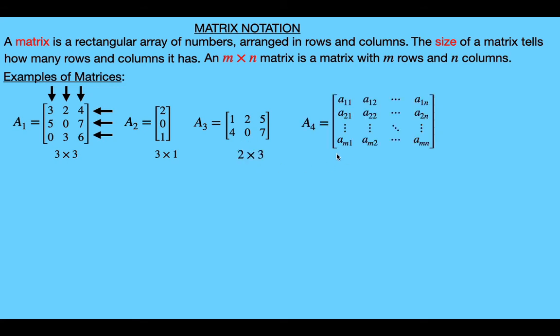Finally, we have a general matrix. The numbers in the matrix are usually elements of a field. If you don't know what a field is, that's completely fine — for the most part we just restrict ourselves to the field of real numbers, so you can think of these as things that represent real numbers. Now notice that each element has an index, and that index represents its place in the matrix.